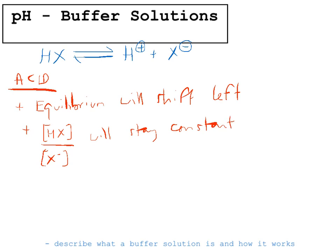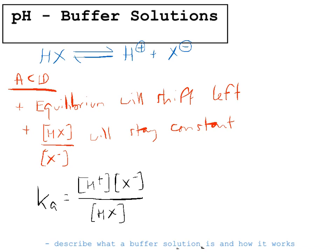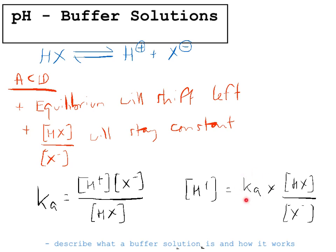The reason why that's important is down to how we calculate the pH of a buffer solution. We use the expression: Ka = [H⁺][X⁻] / [HX]. To work out pH we need the concentration of H⁺, so we rearrange to get H⁺ = Ka × [HX] / [X⁻]. If the ratio HX over X⁻ stays constant, then H⁺ will always equal a multiple of Ka, meaning the concentration of H⁺ stays constant and therefore the pH stays constant.